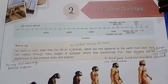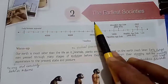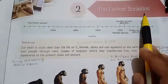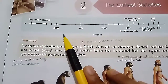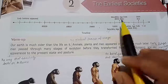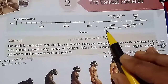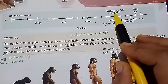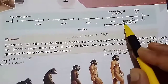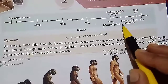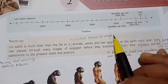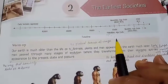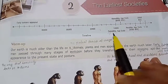Good afternoon, 6th class. Today we are going to start our second chapter of history — 'The Earliest Societies' — which means early man, unki jo sabse pahli society thi. First of all, we will see the timeline. Here is written: Paleolithic age, Mesolithic age, and Neolithic age. Paleo means old, lithic means stone — old stone age. Meso means middle, so Mesolithic means middle stone age. Neo means new, so Neolithic means new stone age. Lithic means stone — the time period when early human beings used stone.